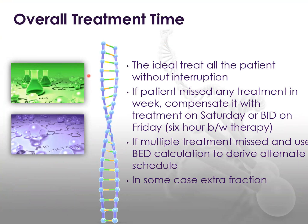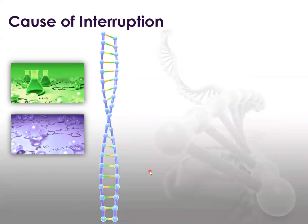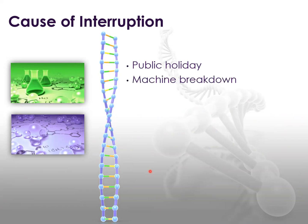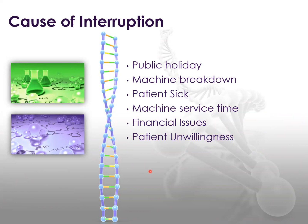The ideal is to treat all patients without interruption. If the patient misses any treatment in a week, compensate it with treatment on Saturday or BID on Friday, with 6 hours between fractions. If multiple treatments are missed, use BID calculation to derive an alternate schedule. In some cases, extra fractions will be incorporated. Causes of interruption include public holidays, machine breakdown, patient sickness, machine service time, financial issues, patient unwillingness, and other factors depending on the clinical situation and environment. Also, radiotherapy reactions.